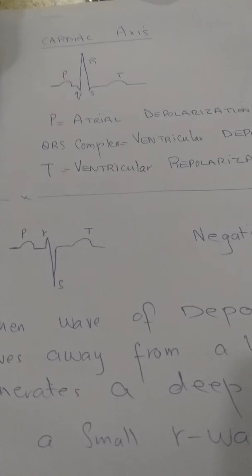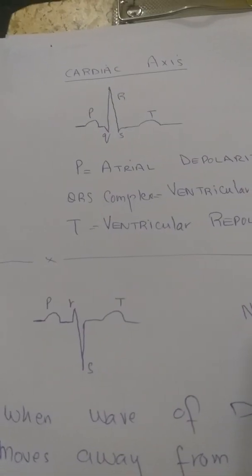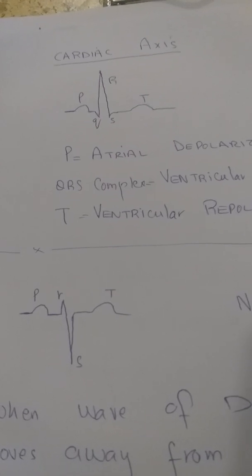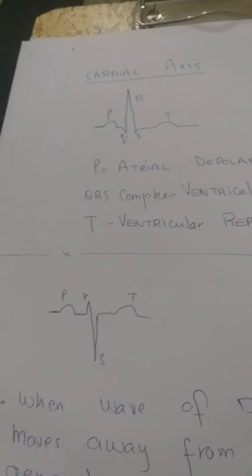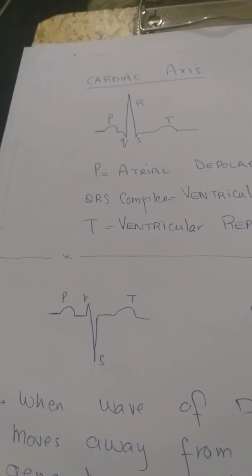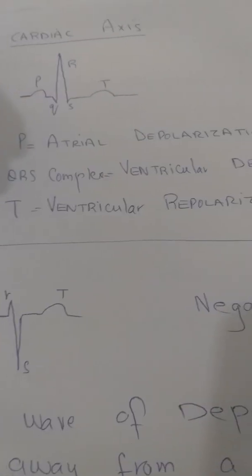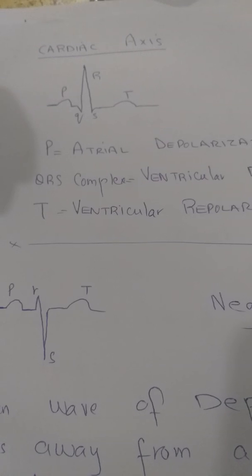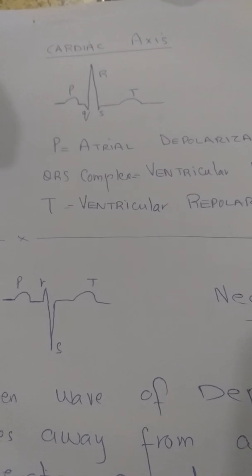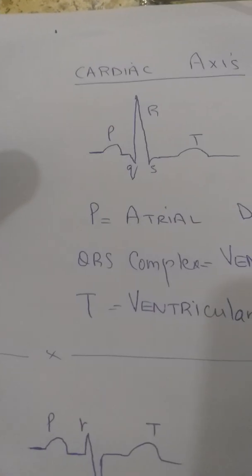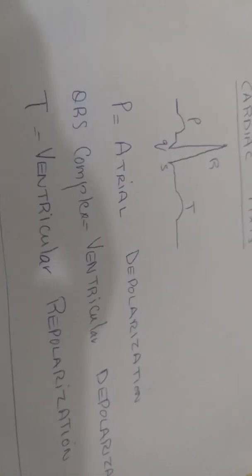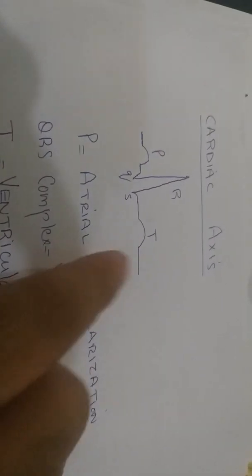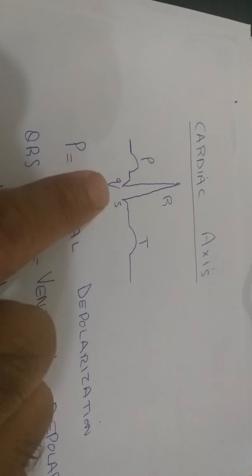Before that we need to understand one very important factor: the basic foundation of the ECG is the P, Q, R, S, and T complexes — just like a brick is the foundation of a wall. P represents atrial depolarization, the QRS complex represents ventricular depolarization, and the T wave represents ventricular repolarization.